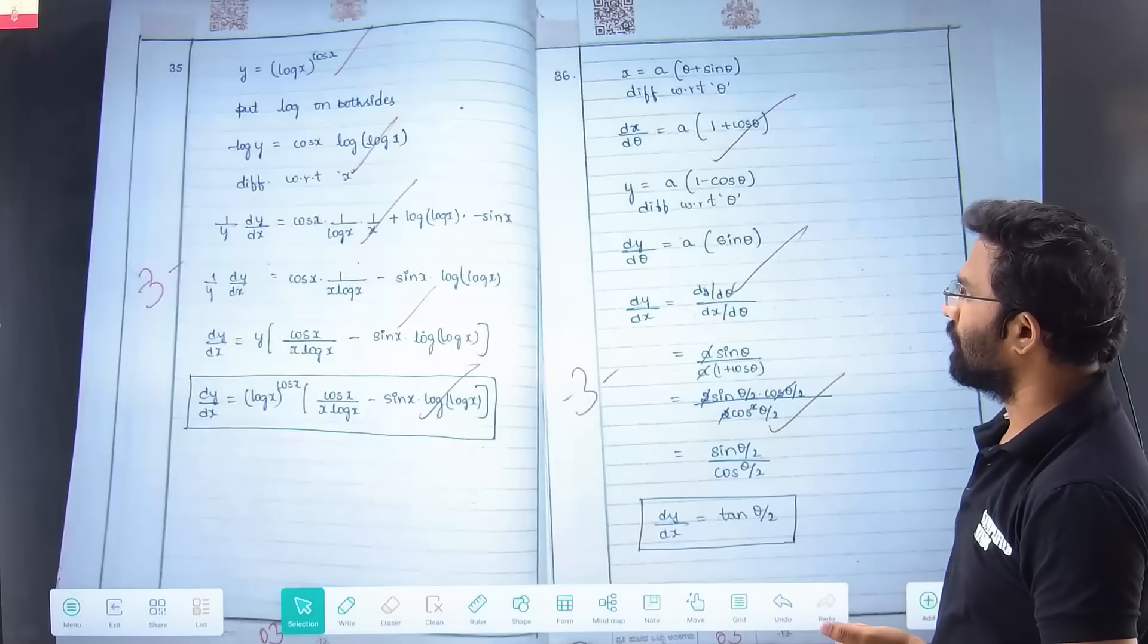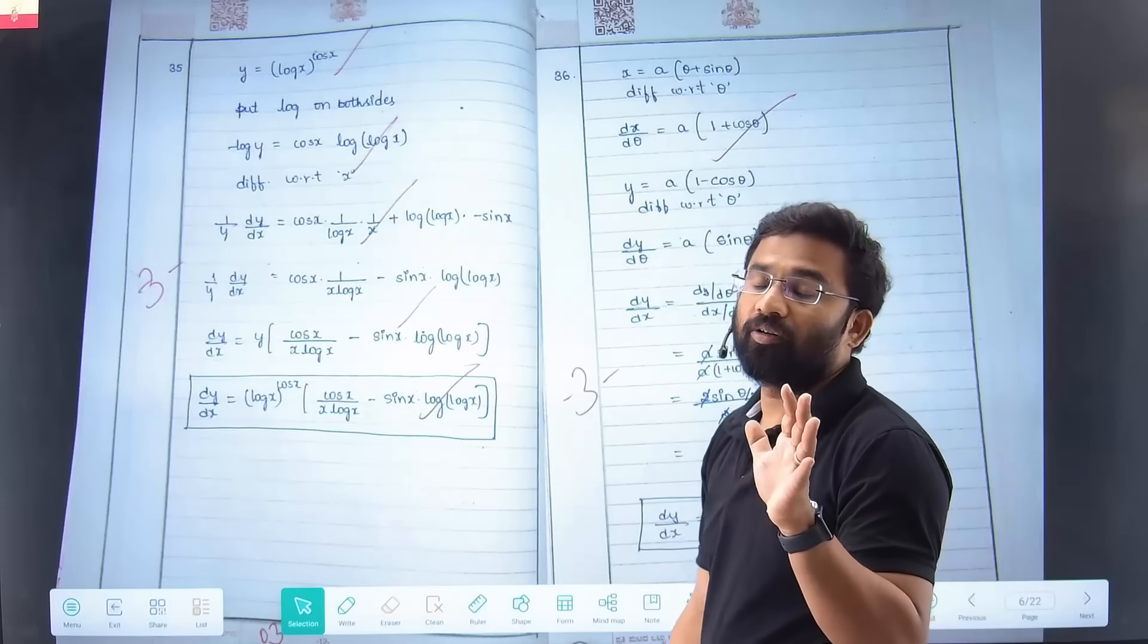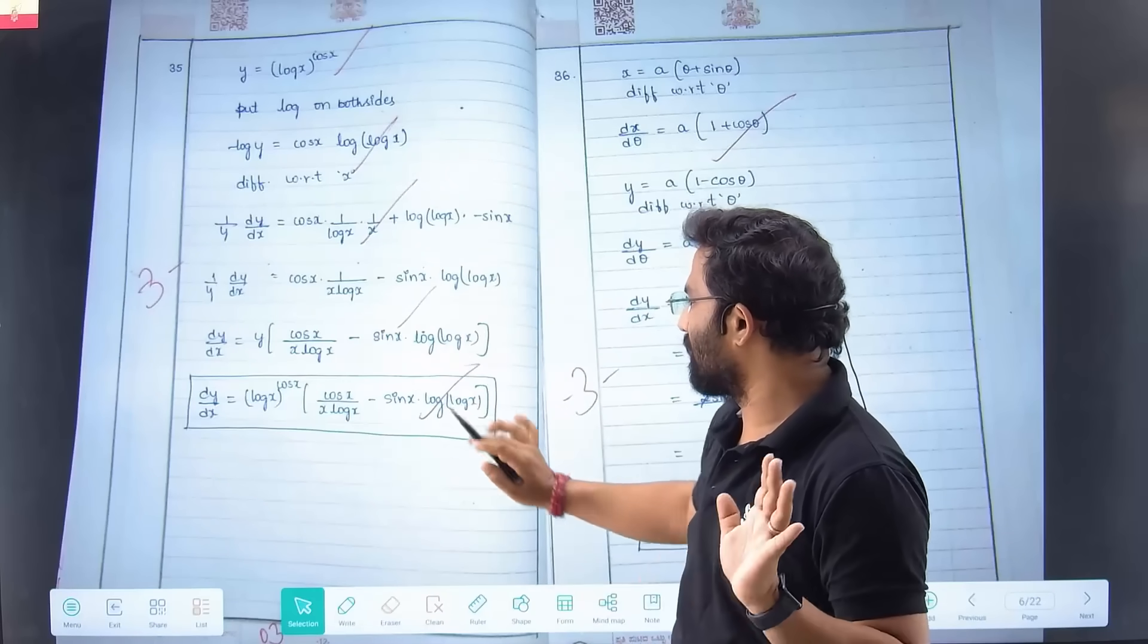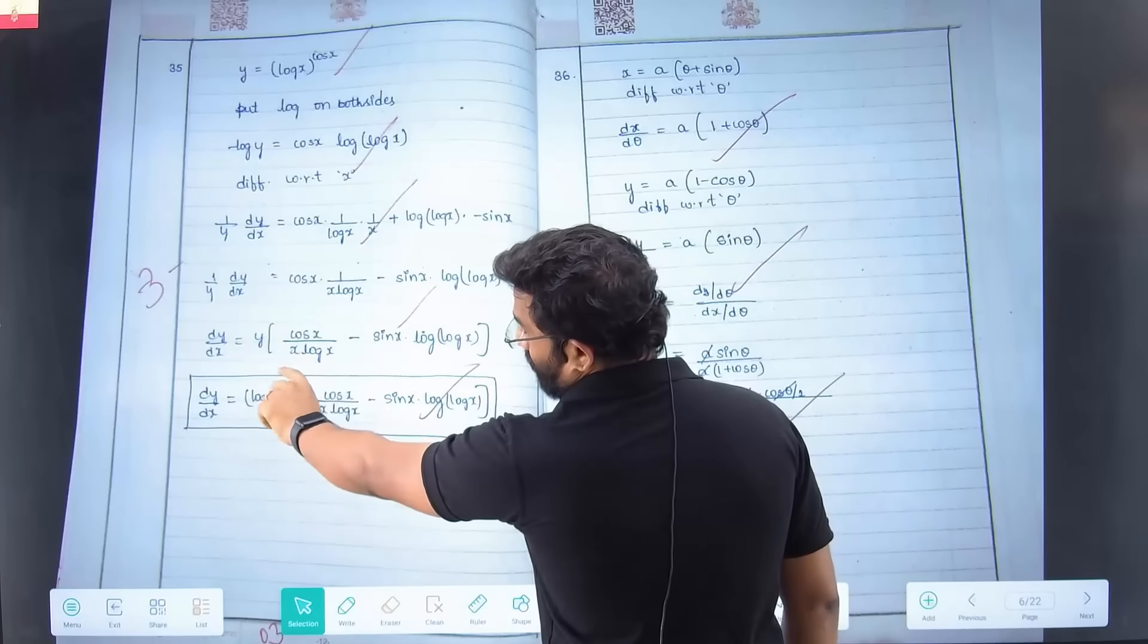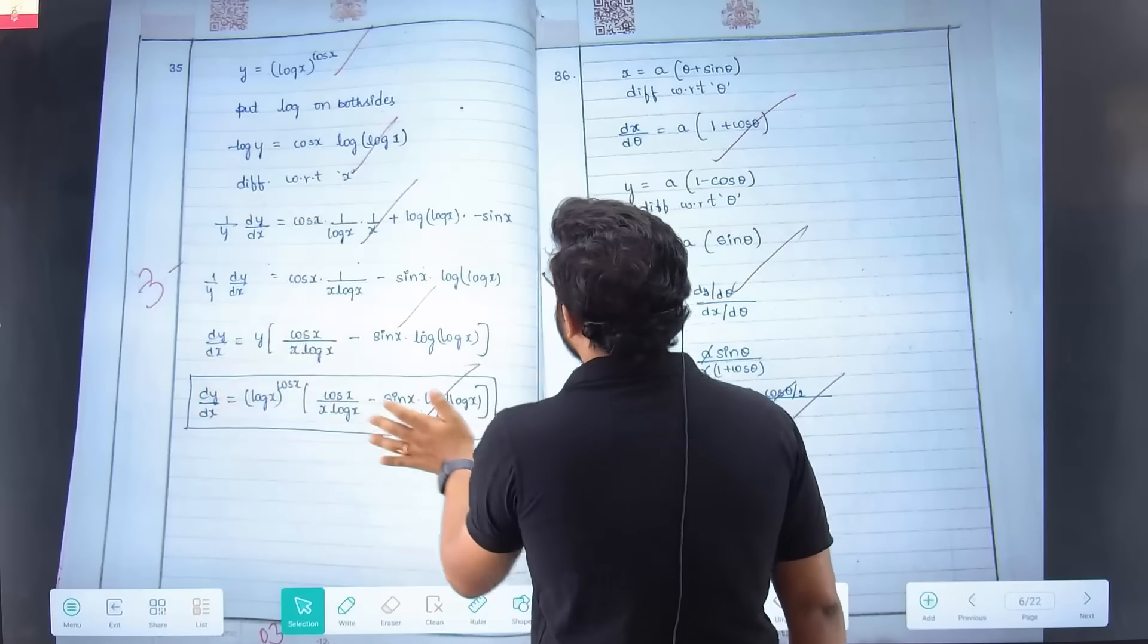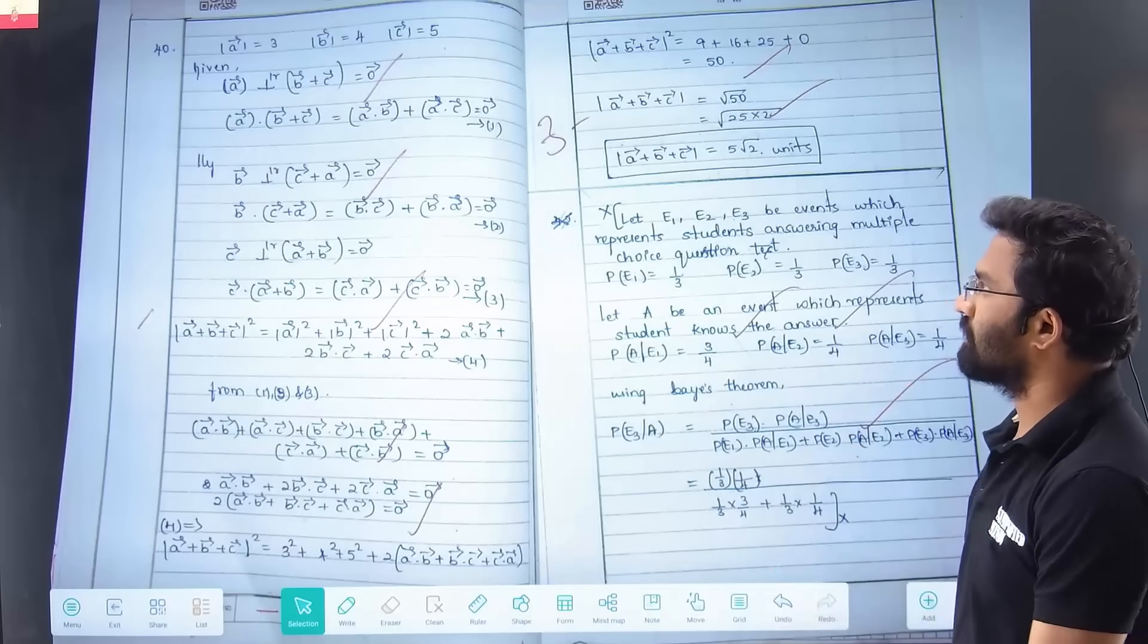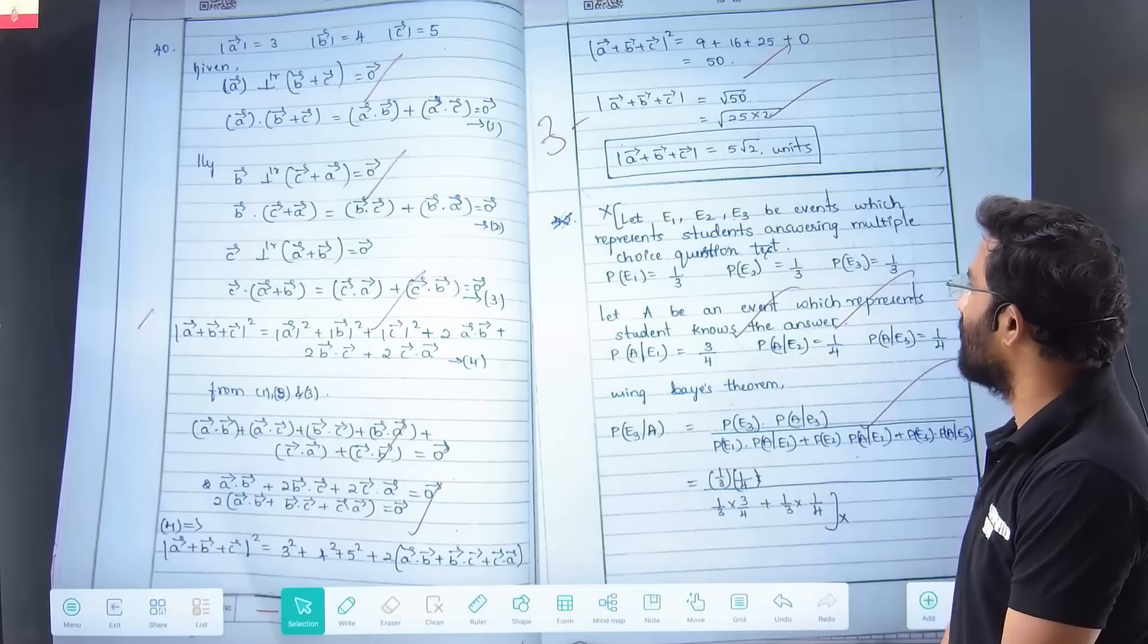Next, you have one more three marker question. Methods of differentiation - either implicit or log or exponential questions. The steps are very simple, you can write it. Don't forget to replace y in the final answer. Again, we have parametric questions. Then vectors questions - how neatly the students presented is very important.